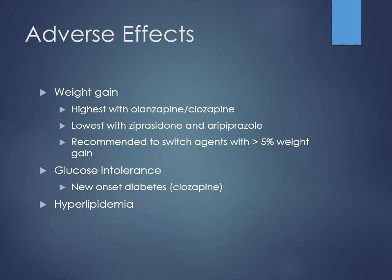Adverse effects of atypical antipsychotics are more metabolic in nature. Weight gain is a major concern — patients can put on 30-40-50 pounds easily. This is most common with olanzapine and clozapine. Ziprasidone and aripiprazole (Abilify) show the lowest amount of weight gain. Aripiprazole is also the one seen most commonly in off-label uses — as an add-on to SSRIs for depression, for ADHD, and other conditions. If a patient gains more than 5% of their body weight, you should probably switch agents.